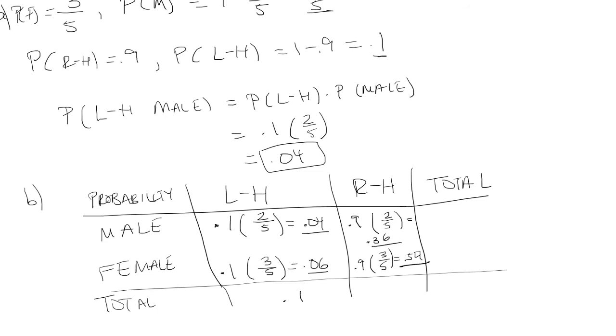Now for the total, we have to add up 0.36 with 0.54 to get 0.9. And if I add 0.1 with 0.9, I get 1, which is exactly what I want.